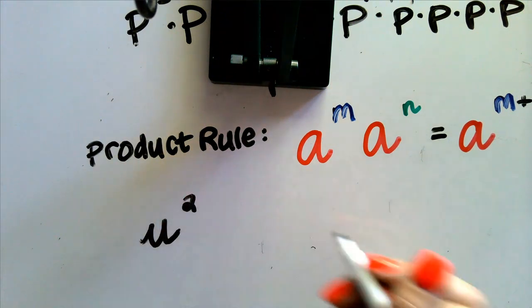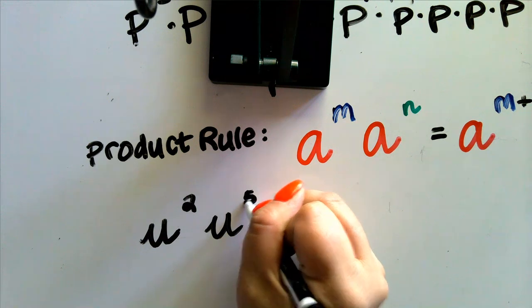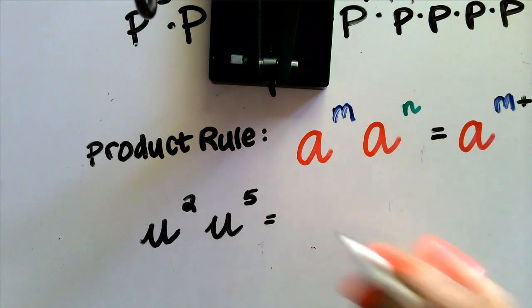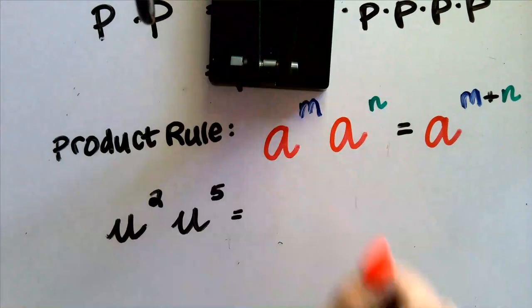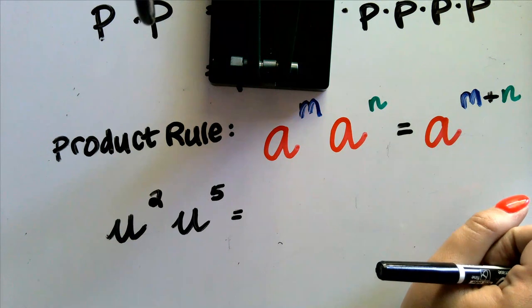u to the second times u to the fifth. Okay, we know that we can, again we know already our exponent rule. We know that this is going to be u to the seventh power because we can just add them together based on our rule.